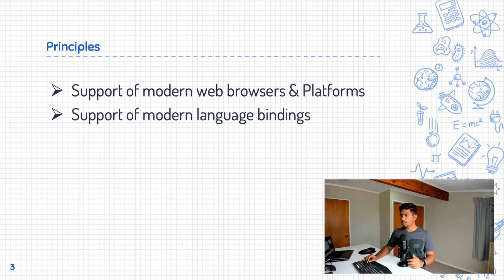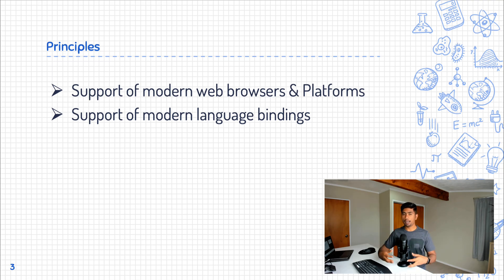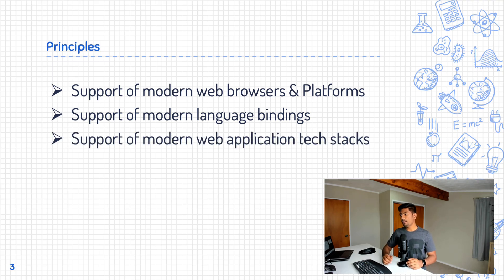The next principle is support of modern language bindings like C#, JavaScript, Java, Python, and Go. These are languages we really need the tool to support so that we can extend the tool for the language tech stack that we are actually going to work with in our company.